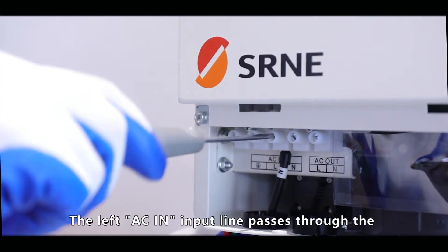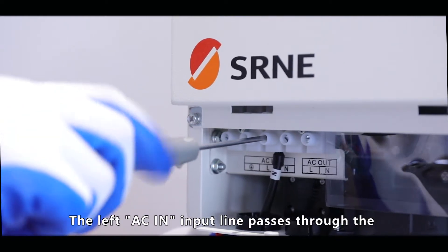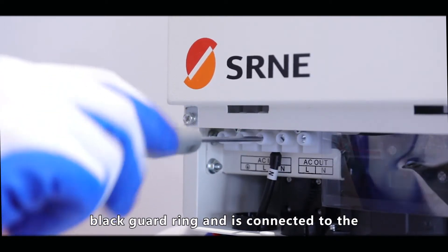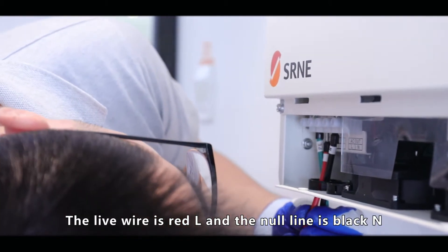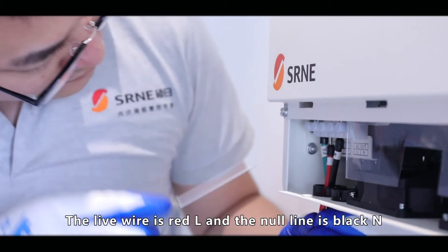The left AC input line passes through the black guard ring and is connected to the yellow-green ground wire with the screwdriver. The live wire is red L and the null line is black N.